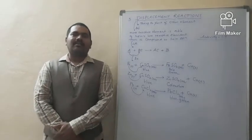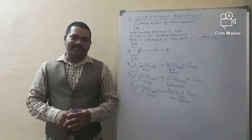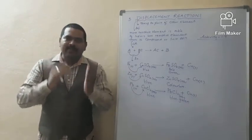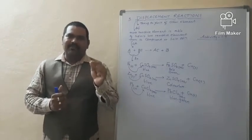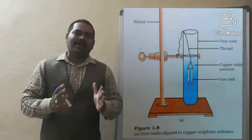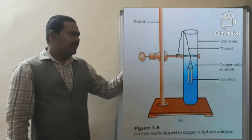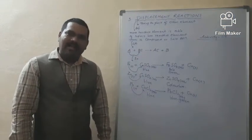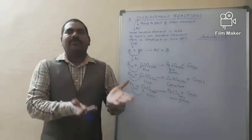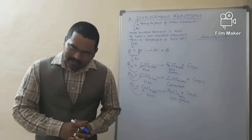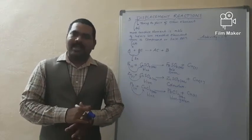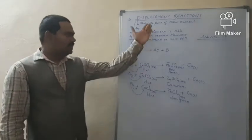To summarize: displacement reactions are those in which a more reactive element is able to replace a less reactive element from its compound or salt solution. The general representation is A + BC → AC + B. During displacement reactions, there is a change in the color of the solution, and the less reactive element forms as a deposit or layer on the more reactive element.